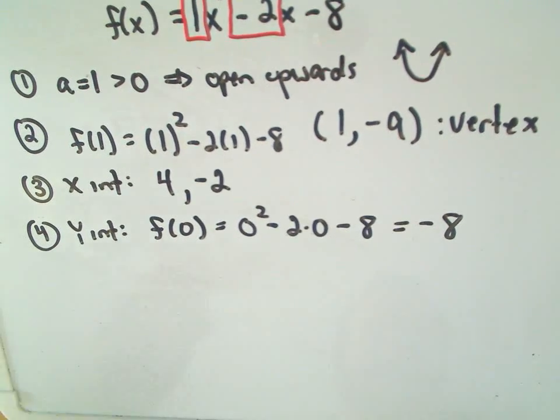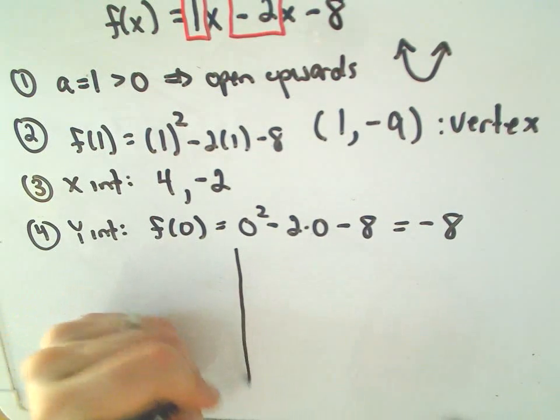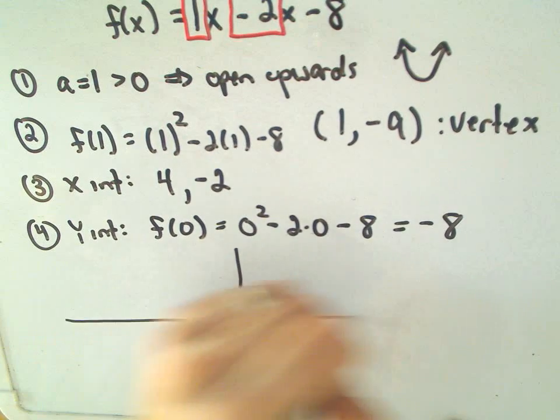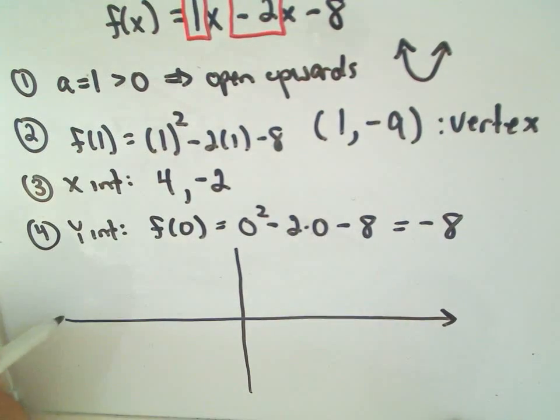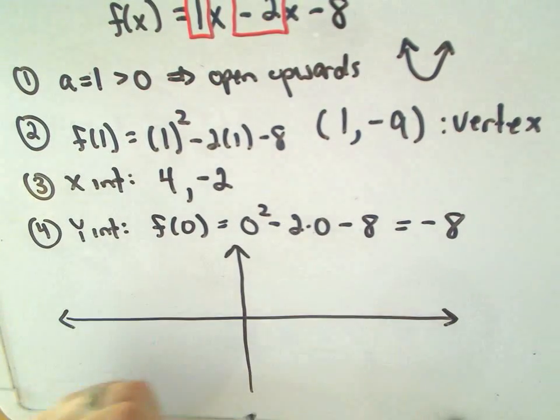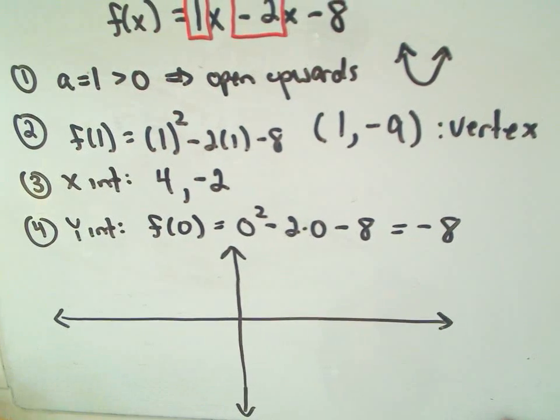And now, all we have to do is make a little sketch of this stuff. If you need a few more points, just plug in a couple extra x-values, and that'll give you some extra values on your graph.